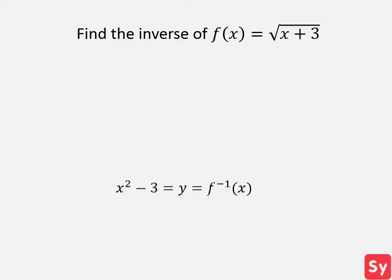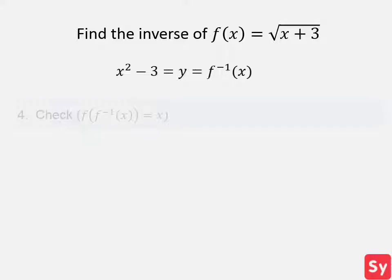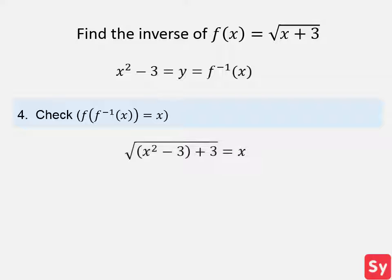Finally, we will check that the inverse is correct using this equation. We plug the inverse in for x and f of x, and it equals x. So x squared minus 3 is the inverse.